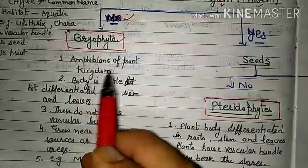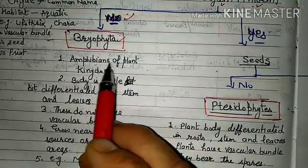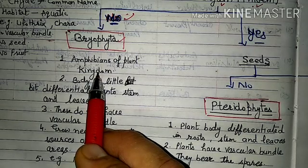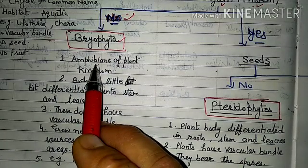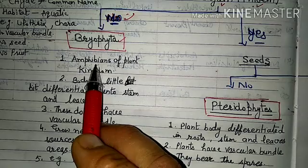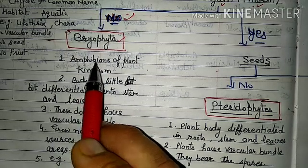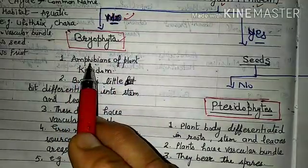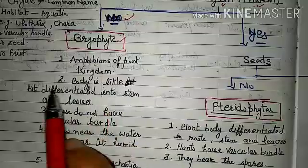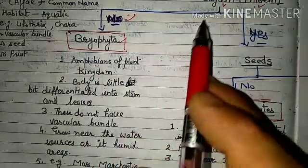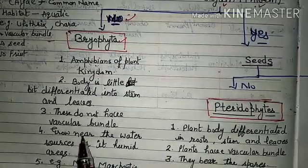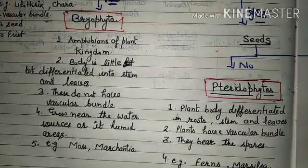Bryophyta is called the amphibians of the plant kingdom, because they need water to complete their life cycle — just like frogs, which live both in water and on land. They require water for reproduction. The body is slightly differentiated but they do not have a vascular bundle — no true xylem and phloem. They grow near water sources and in humid areas. Examples include moss and Marchantia.